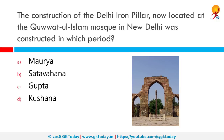The construction of the Delhi iron pillar, now located at the Quwwat-ul-Islam Mosque in New Delhi, was constructed in which period? As per Natyadarpan or Vishnudharmottara, the iron pillar had been put up by Chandragupta II himself after defeating the Vailakas, designating that pillar as a memory of the victory. The correct answer is Guptas. The pillar is made of 98% wrought iron and has stood more than 1,600 years without rusting or decomposing.